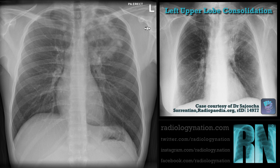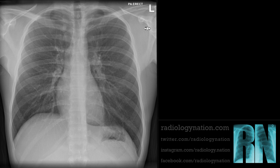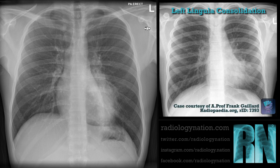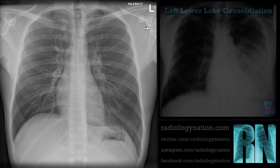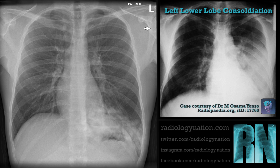Consolidation in the left upper lobe may present with loss of the left mediastinal contour and loss of the left heart border. The left lingula lies against the left ventricle, so consolidation in the lingula will obscure the left heart border. The left lower lobe is in contact with the left hemidiaphragm, so consolidation in this lobe may obscure the silhouette of the left hemidiaphragm while the left heart border will be preserved.